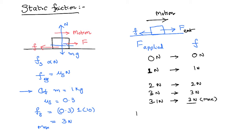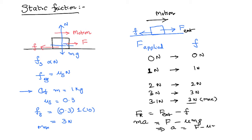With what acceleration does the body move? We can write F_resultant = F_applied − frictional force = Ma, as per Newton's law. So: F_external − μN = μmg, and the acceleration equals (F_applied − μmg) divided by the mass of the body. Remember, all this happens only when the applied external force is greater than the maximum static frictional force. If the applied force is less than the static frictional force, the body will never come into the state of motion.